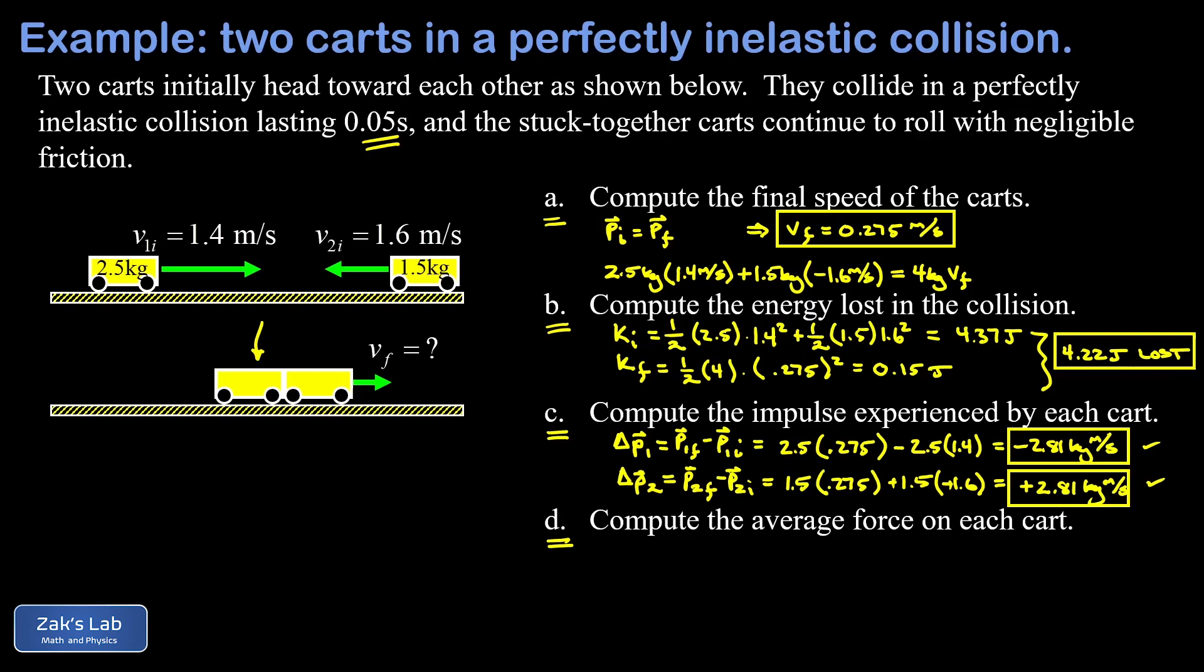Finally, the impulse experienced by each of these carts together with the time for the collision allows us to find the average force experienced by each one of the carts during the collision. The force experienced by the first cart, we'll call that f1, is going to be the impulse experienced by that cart, delta p1, divided by the time it took, delta t. So we take that negative 2.81 kilogram meters per second impulse - that's a leftward change in momentum for that initially moving to the right car - divided by the time for the collision, 0.05 seconds. Notice this gives us units of kilogram meters per second squared - that's units of mass times acceleration, so units of force. We get an average force of negative 56.3 newtons on this cart.